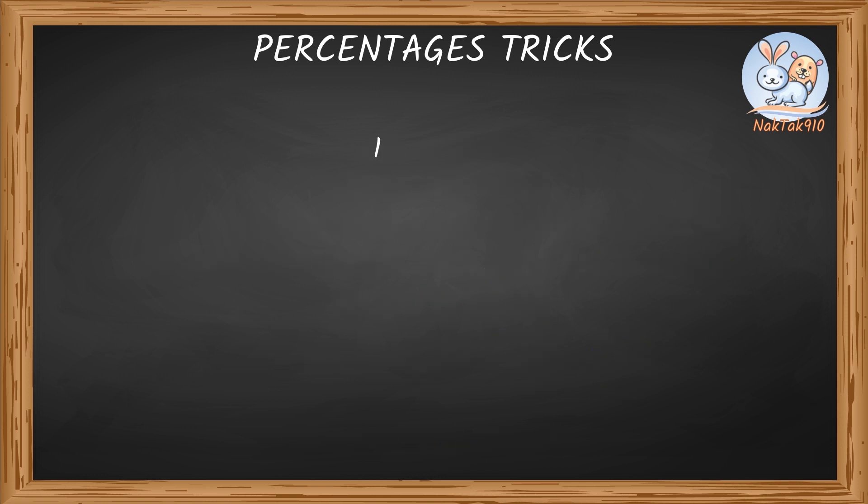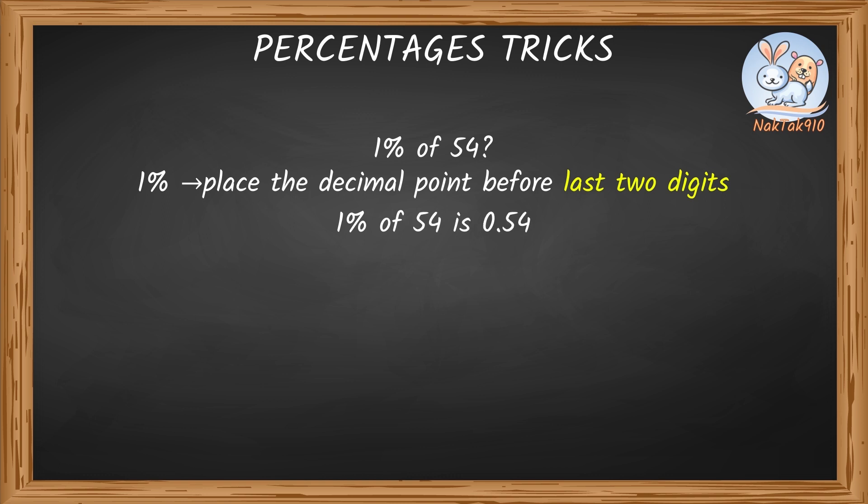Now tell me, what is 1% of 54? 1% of any number means to place the decimal point before the last two digits. So, 1% of 54 is 0.54. Perfect!